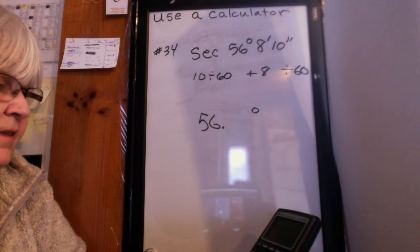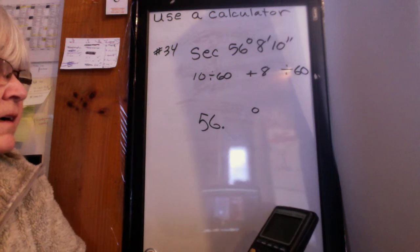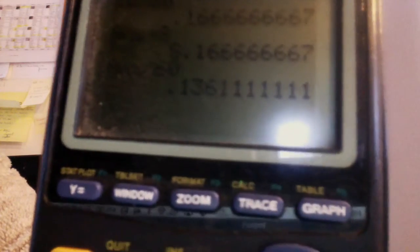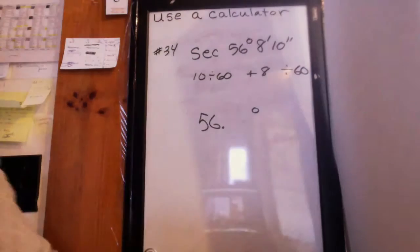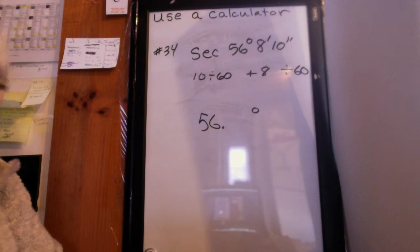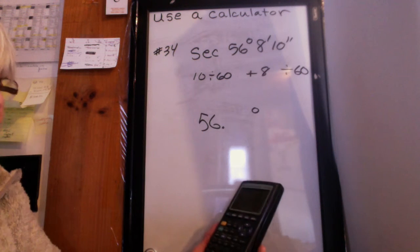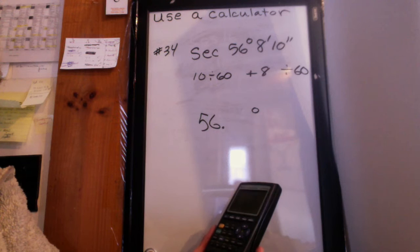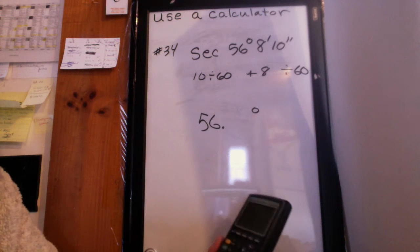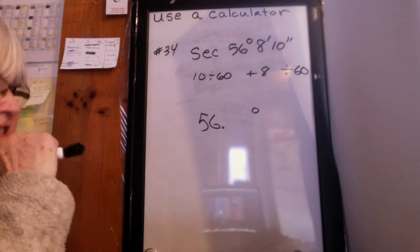Now do divided by 60 again. And this time you can see what I get. Point 13611. You can stop the video to double check if you want. So then I'm going to add 56. So plus 56, hit enter. So now I have 56 plus that long decimal. I want the secant of that.